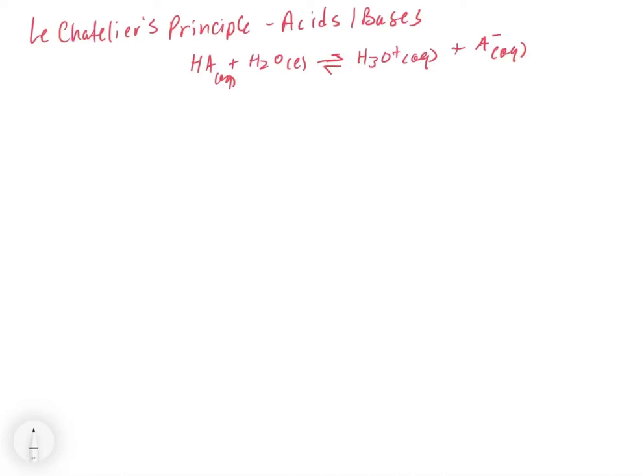In this video, we're going to look at how we can perturb some of these acid-base equilibria. We're going to use the example of a weak acid: HA plus H2O gives H3O plus and A minus. This could be any weak acid. We're going to think of some possible ways of messing up this equilibrium and seeing if we can shift it in either direction.